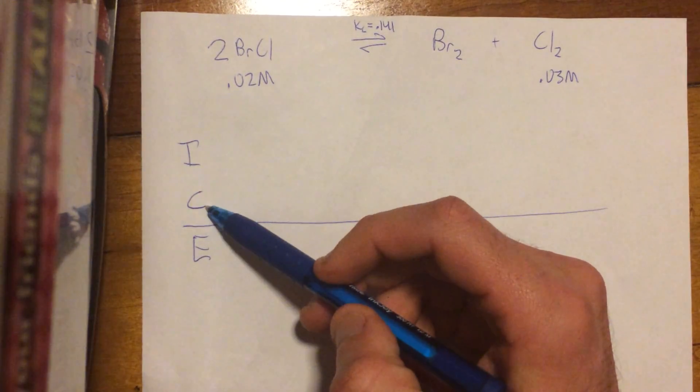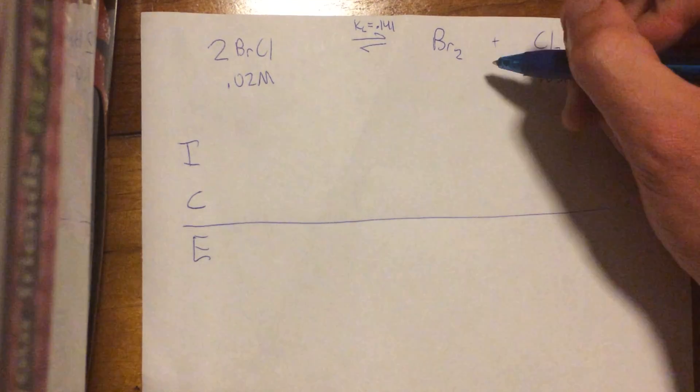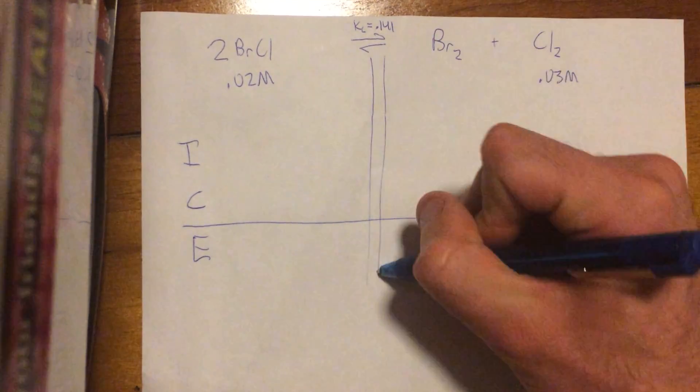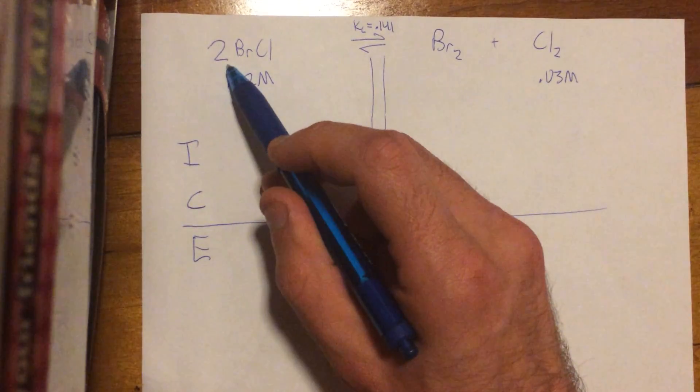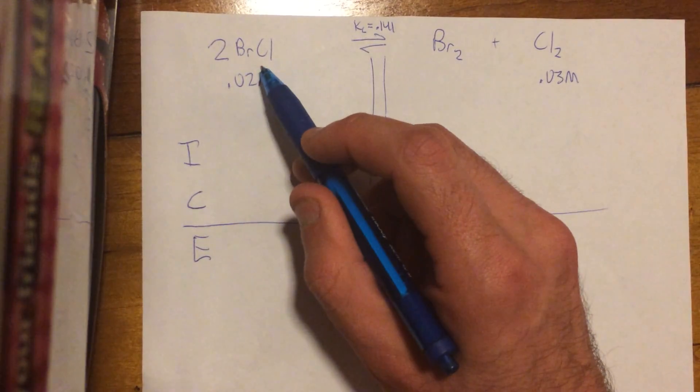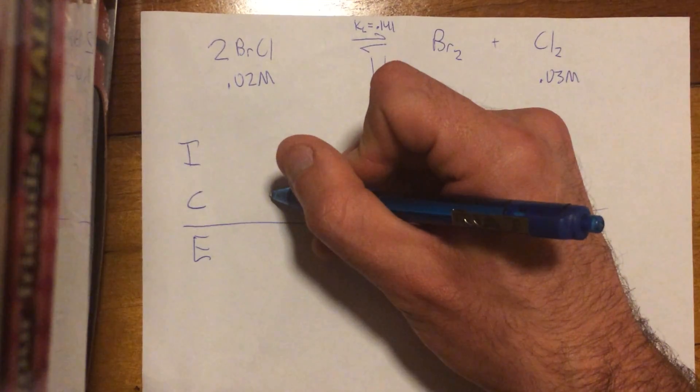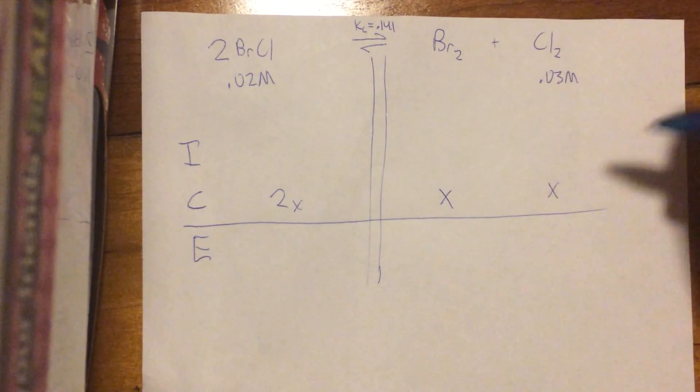That's initial, change, and equilibrium. So, I like to do this little double line thing here. All right, so basically first you just look at the coefficients of each of these. This one has 2, so I'll put 2x. This one has 1, so just 1x, and 1x.